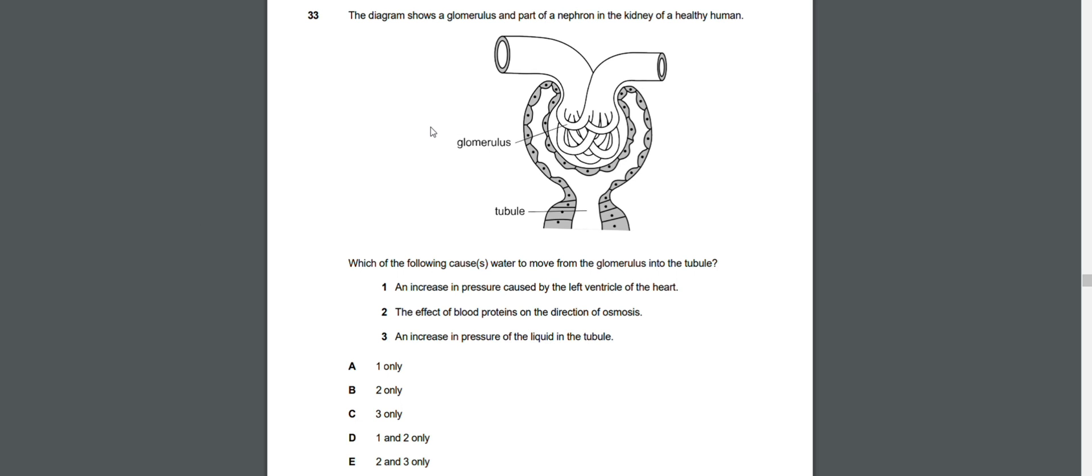Question 33: The diagram shows the glomerulus and part of a nephron in the kidney of a healthy human. Which of the following causes water to move from the glomerulus into the tubule? Since water is a fluid, fluids move from an area of high concentration into an area of low concentration. So option 3 is incorrect - an increase in the pressure of the liquid in the tubule. It should be a decrease in pressure of the liquid in the tubule so the water could move from the glomerulus into the tubule.